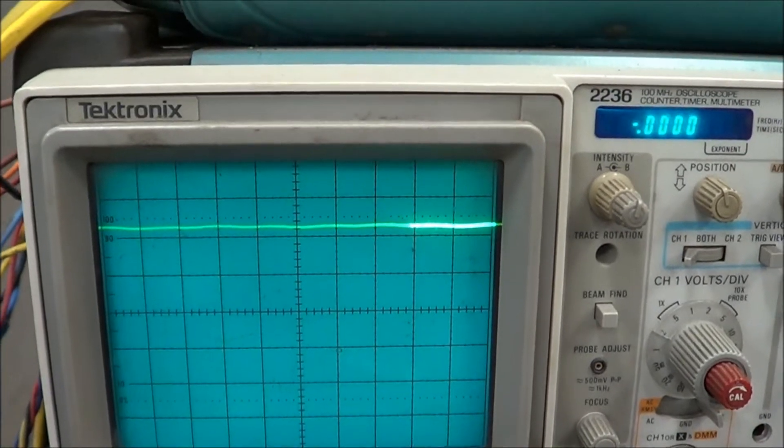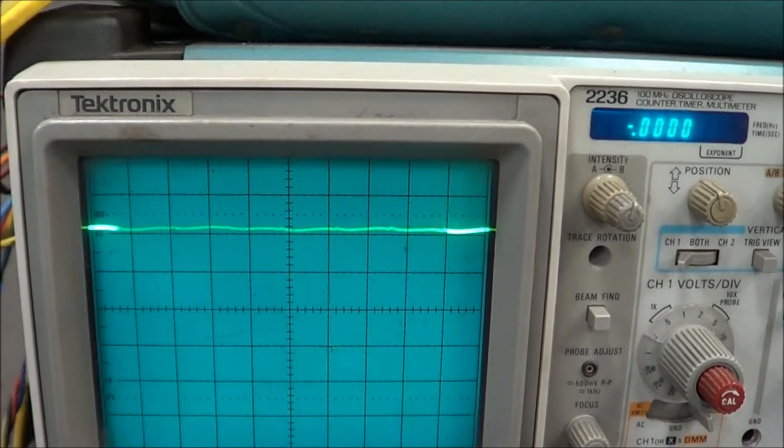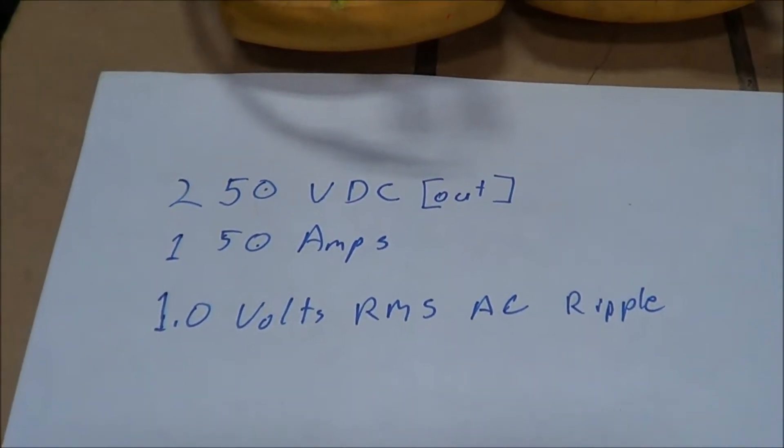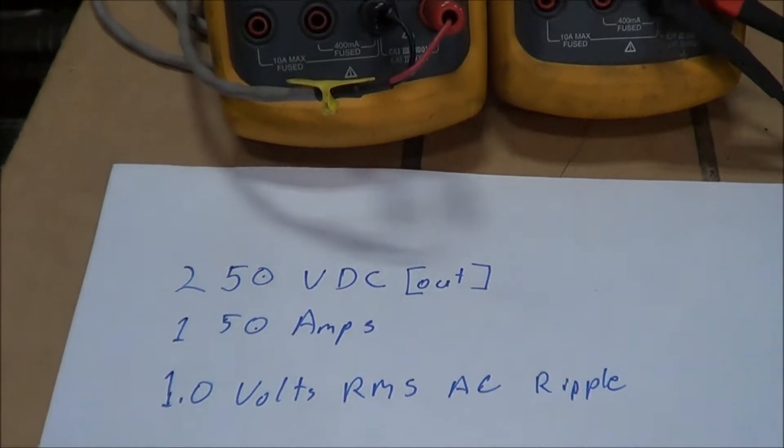This unit is fully filtered, it has an internal choke and capacitor bank. We're operating about 250 volts, 150 amps, about 1 volt RMS AC on the ripple.